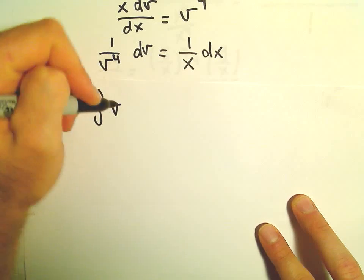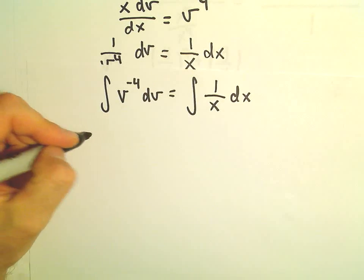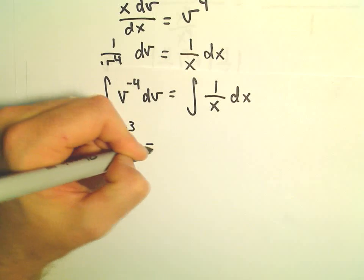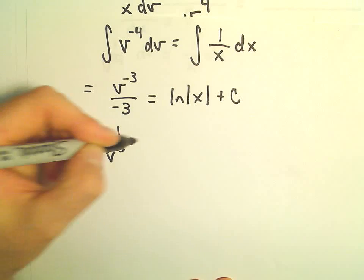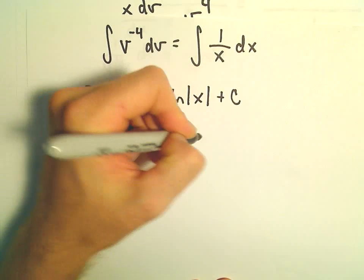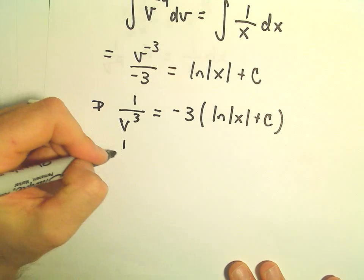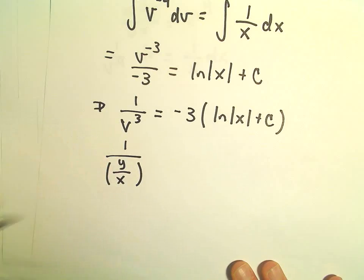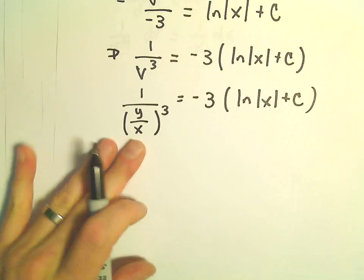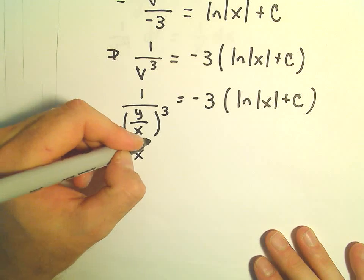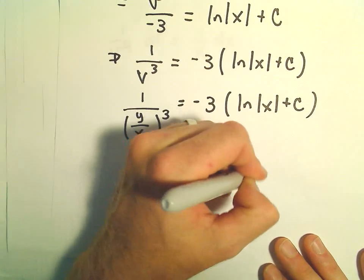Now we integrate both sides. On the left side we integrate v to the negative fourth dv, and on the right we have the integral of 1 over x dx. This gives v to the negative third over negative three on the left, and the natural logarithm of the absolute value of x plus c on the right. Rewriting, that is negative 1 over 3v to the third equals ln|x| plus c.